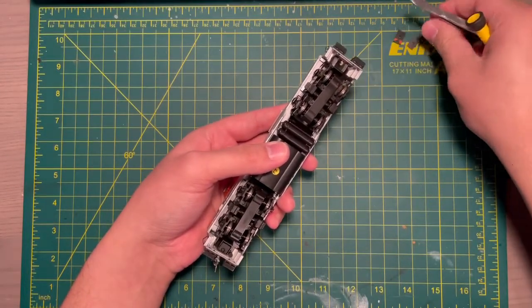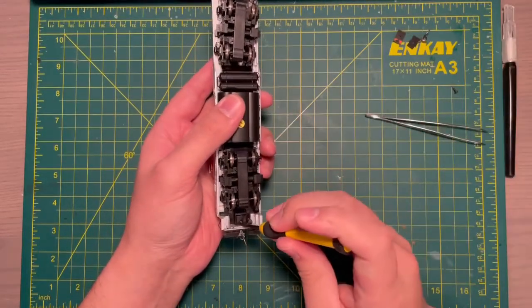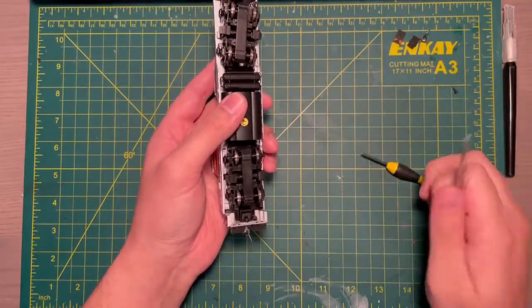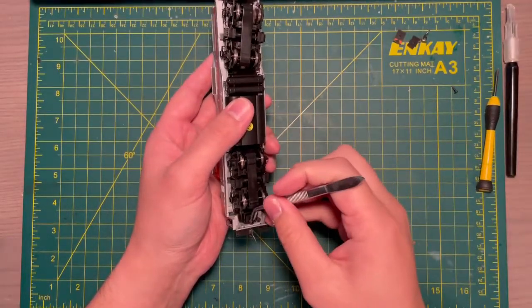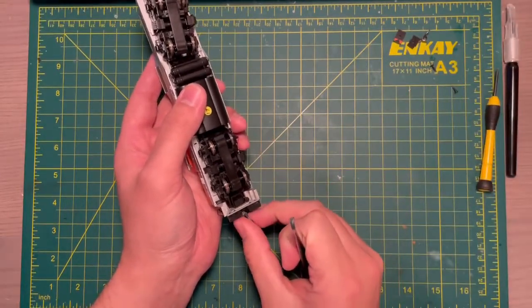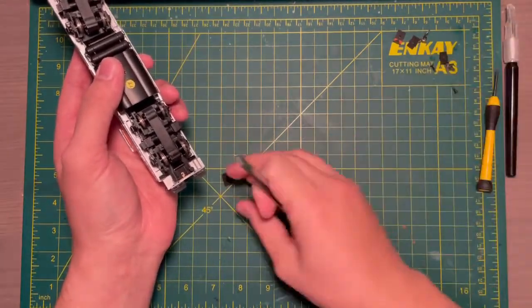To open up the Athern Genesis GP9, all you have to do is remove the coupler boxes. There are two Phillips head screws. Once you remove that, you'll be able to open up the shell. Sometimes the shell gets a little bit stuck on the plow. All you have to do is just pry a little bit open with your fingers.